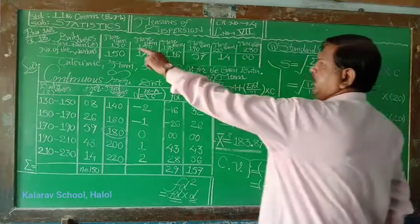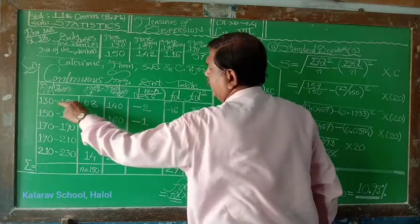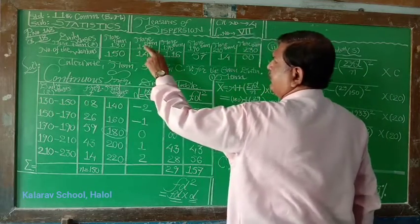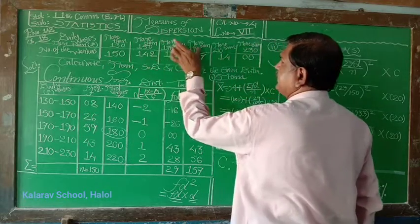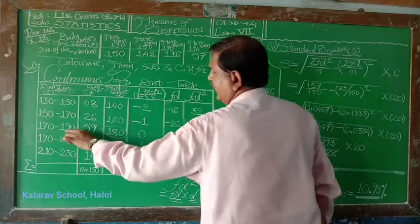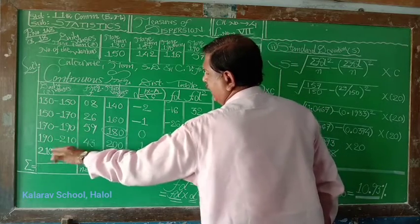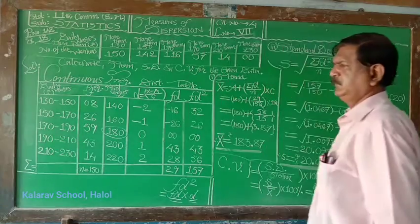More than 130 means 130 to 150. More than 150, 150 to 170. Class interval is 20. 170 to 190, 190 to 210, 210 to 230.